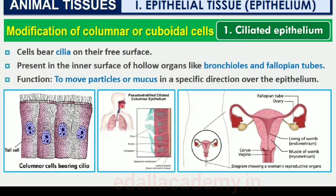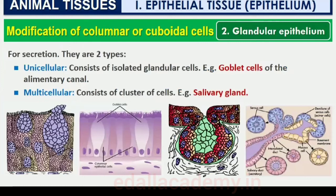Some of the columnar or cuboidal cells get specialized for secretion and are called glandular epithelium. They are mainly of two types: unicellular, consisting of isolated glandular cells such as goblet cells of the alimentary canal, and multicellular, consisting of a cluster of cells such as salivary gland. On the basis of the mode of pouring of their secretions, glands are divided into two categories: exocrine and endocrine glands.